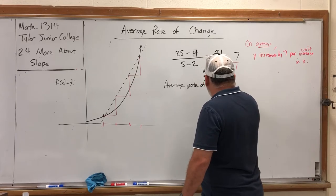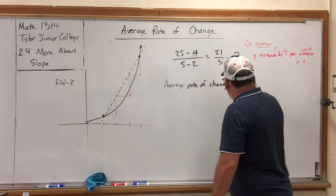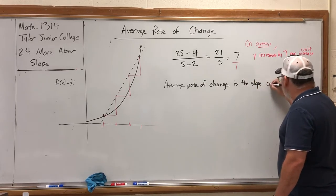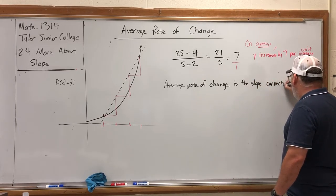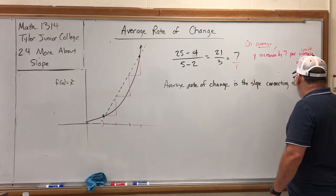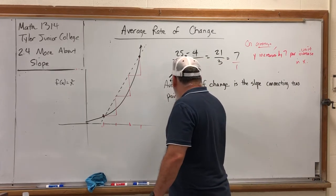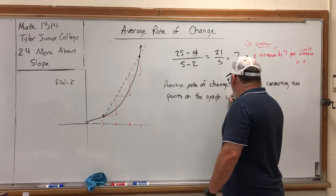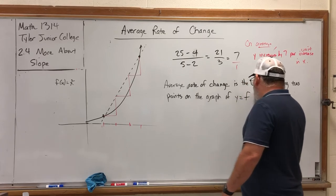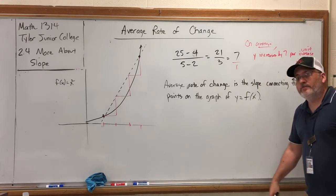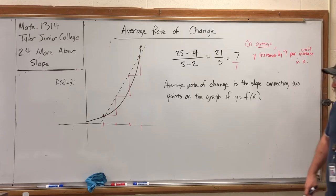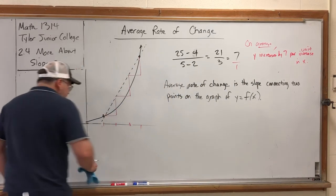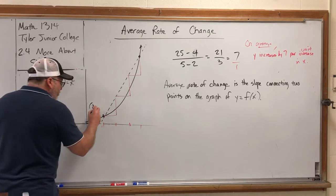The average rate of change is the slope connecting two points on the graph of y = f(x). Whether or not the graph is a line is irrelevant. You can calculate average rate of change by simply calculating the slope of any two points on a graph.